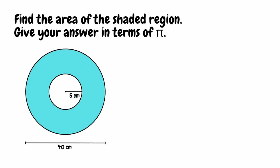To find the area of the shaded region we're going to find the area of the big circle and take away the area of the small circle. Starting with the big circle, we want to find the area so we're going to use the formula pi r squared.